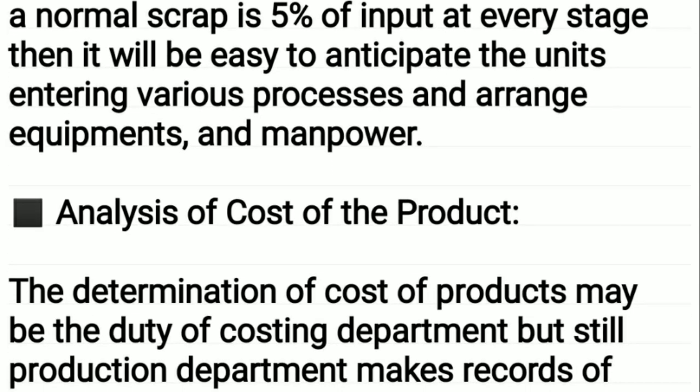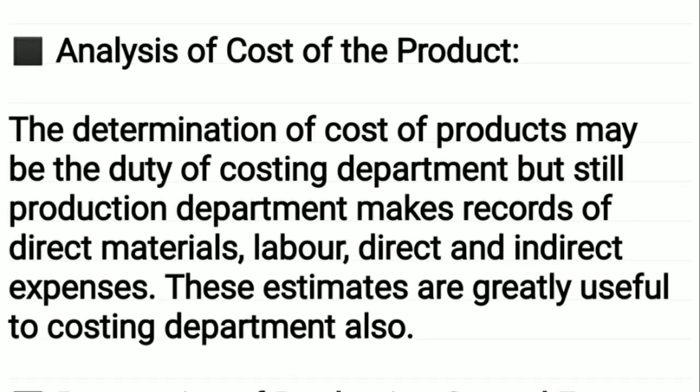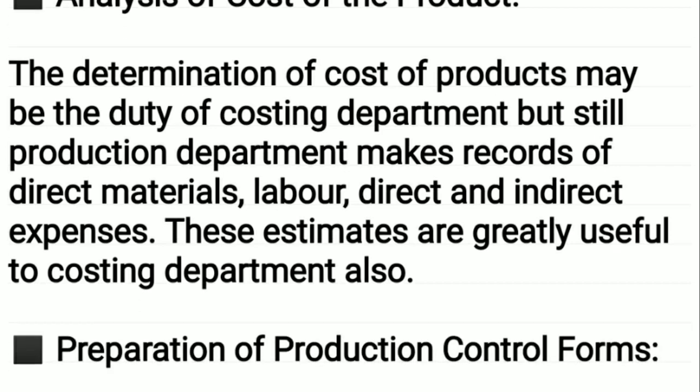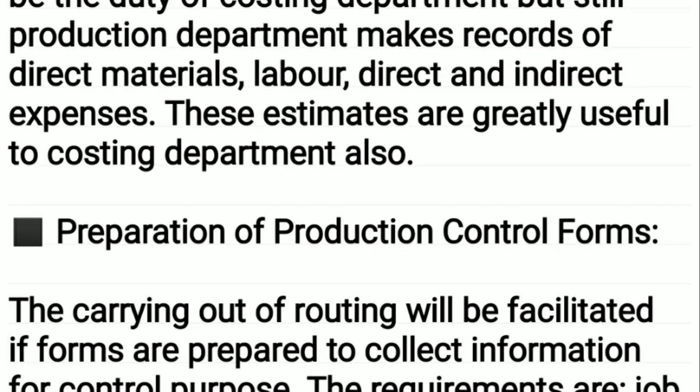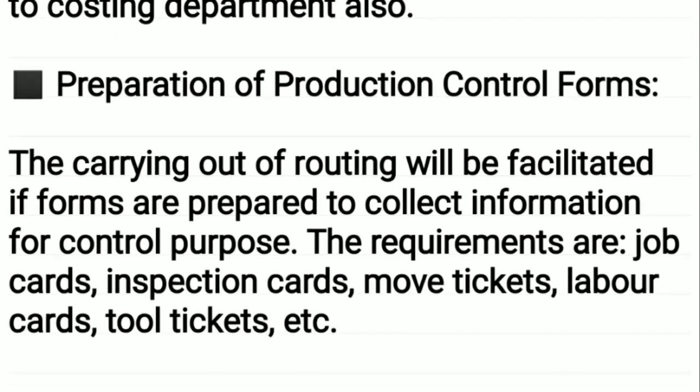This anticipation helps in arranging equipment and manpower accordingly. Analysis of the cost of the product: the determination of cost may be the duty of the costing department, but still the production department makes records of direct materials, direct labor, and indirect expenses. These estimates are greatly useful to the costing department as well.